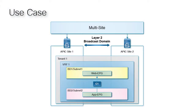This Cisco ACI multi-site use case shows a tenant and VRF are stretched between sites. The EPGs in the VRF, along with their bridge domains and subnets as well as their provider and consumer contracts, are stretched between sites. Layer 2 broadcast flooding is enabled across sites, leveraging the head-end replication (HER) capabilities of the spine nodes that replicate and send the frames to each remote fabric where the Layer 2 bridge domain has been stretched.